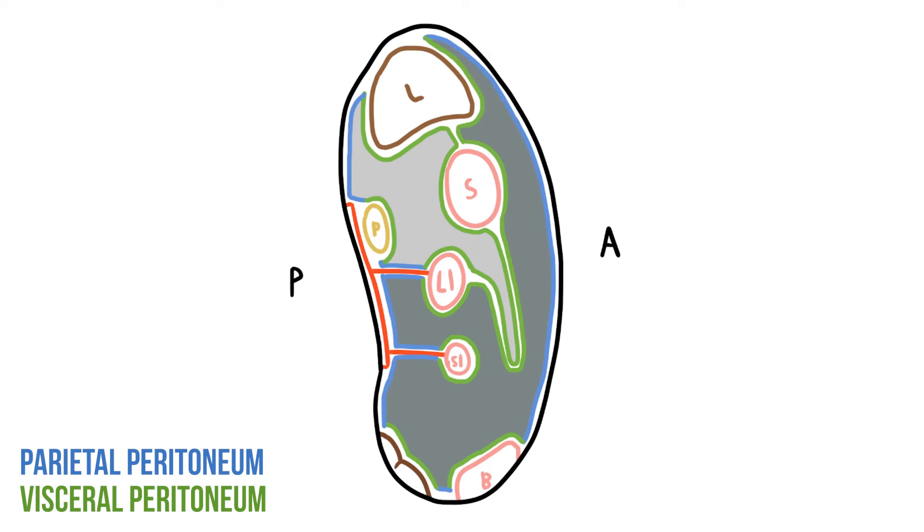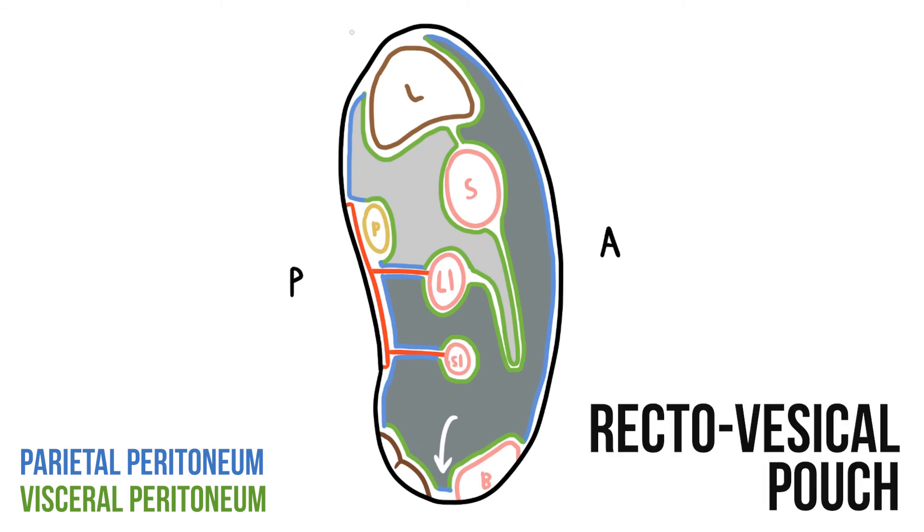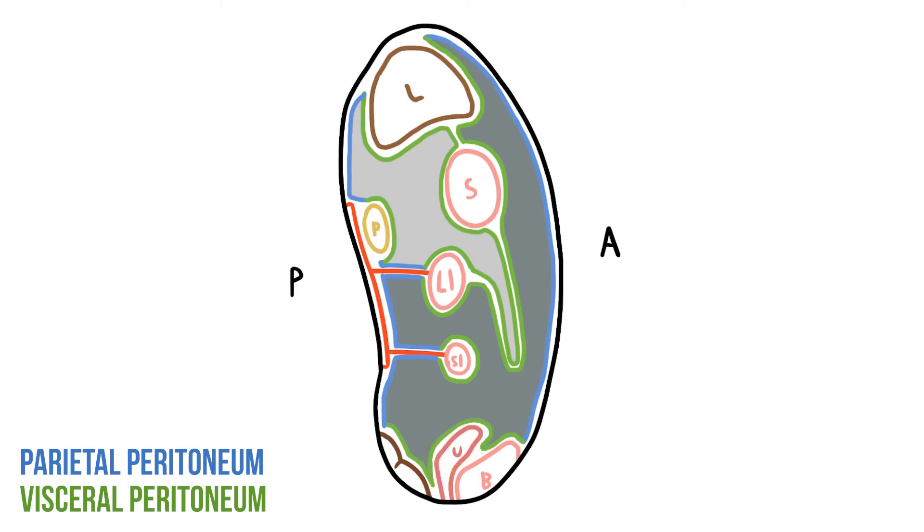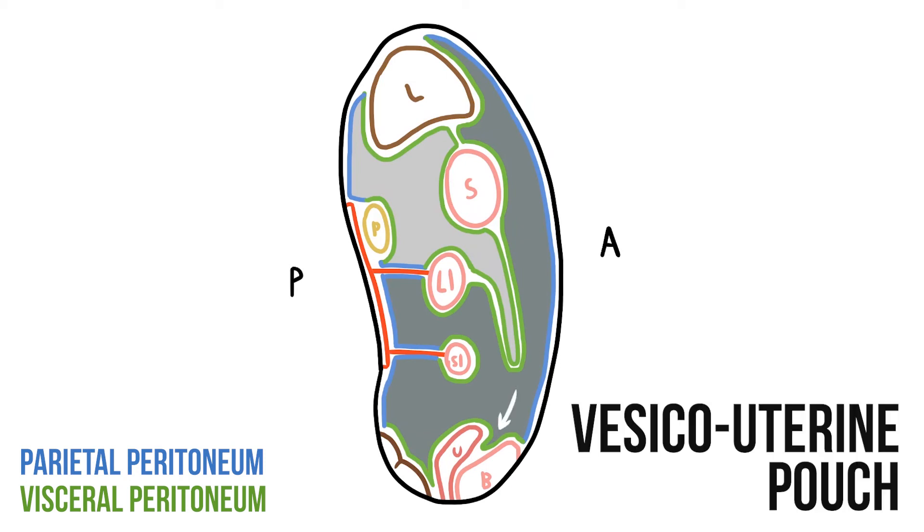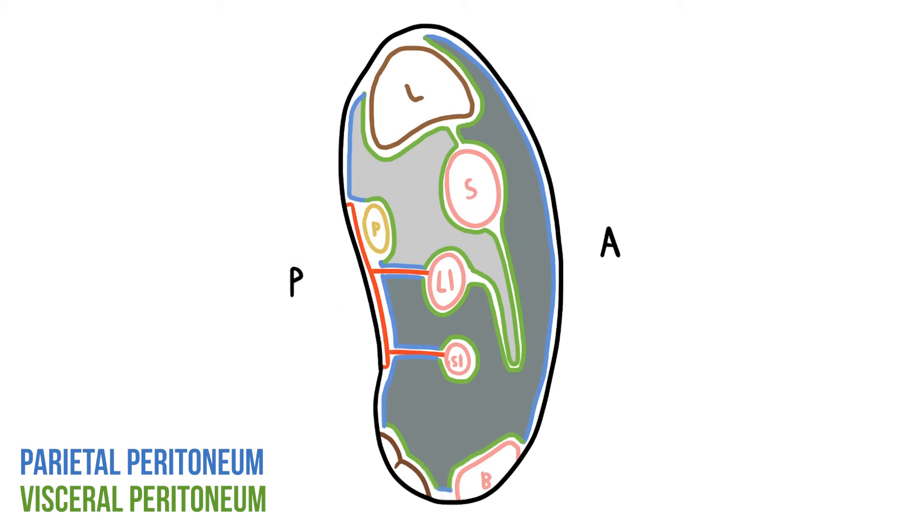As the membranes wrap around the viscera, they also create various pouches and spaces, such as this one here between the rectum and the bladder. This is known as the rectovesical pouch. In women, the uterus would sit between these structures creating two pouches, a vesicouterine anteriorly and a rectouterine posteriorly. These pouches can be important clinically, as any fluid in the abdomen will collect here in an upright patient.